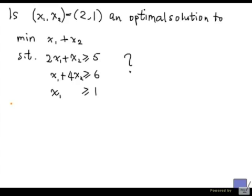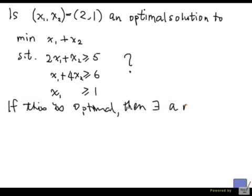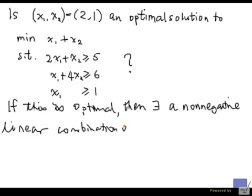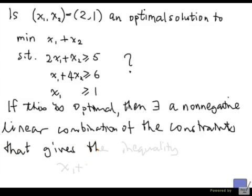If this were an optimal solution, then there exists a non-negative linear combination of the constraints that gives the inequality x1 plus x2 greater than or equal to 3. Why is that? Well, this is something that we have done a few videos ago.